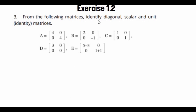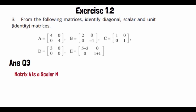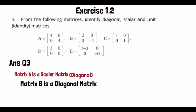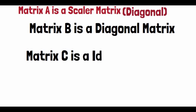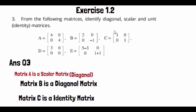Matrix P is a diagonal matrix because it has non-zero entries on the diagonal and zero elsewhere. Answer of Question No. 3: Matrix A is a scalar matrix, and a scalar matrix is always also a diagonal matrix. Matrix B is a diagonal matrix. Matrix C is a special matrix — it is called an identity matrix because it has ones on the diagonal and zeros elsewhere.